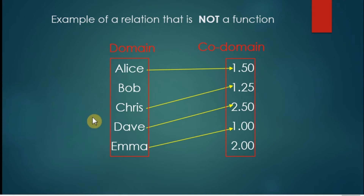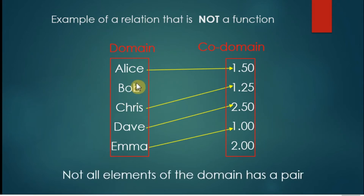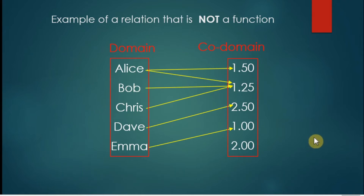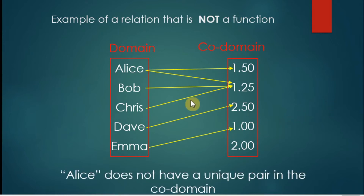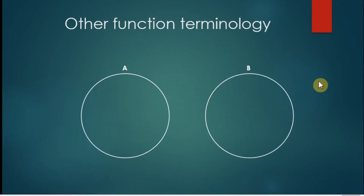This next example is not a function because it violates the first condition — not all elements in the domain have a pair. This other example is also not a function because, although all elements have a pair, not all of them have a unique pair. Alice has two pairs: 1.5 and 125. So this is not a function.